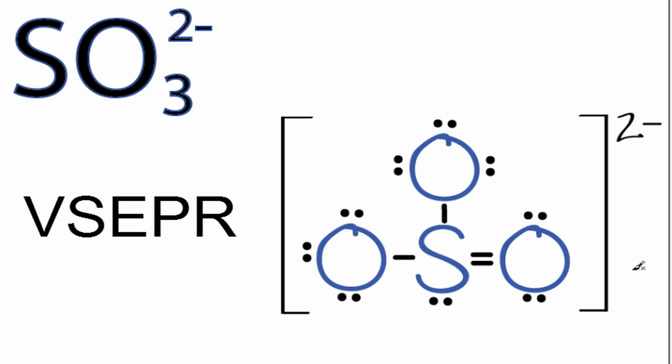So according to valence shell electron pair repulsion theory, we want to imagine that those three oxygens and that lone pair of electrons are going to spread out, push each other apart as far away as possible, and that'll give us our molecular geometry for SO3 2-.